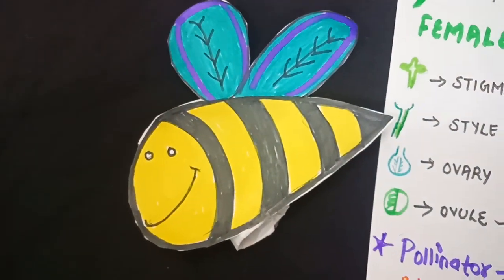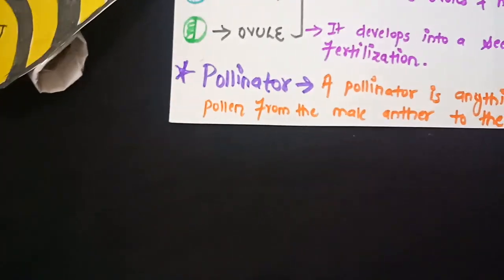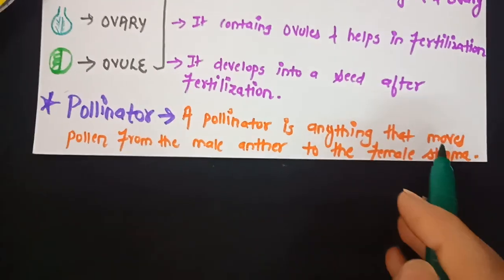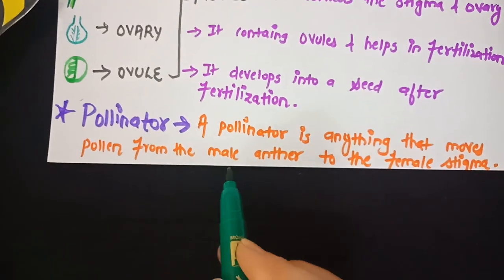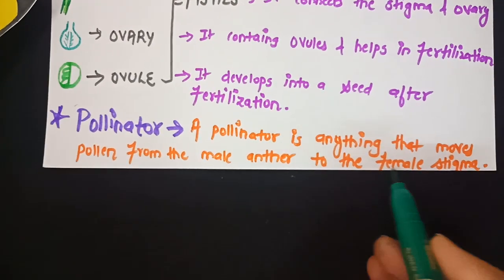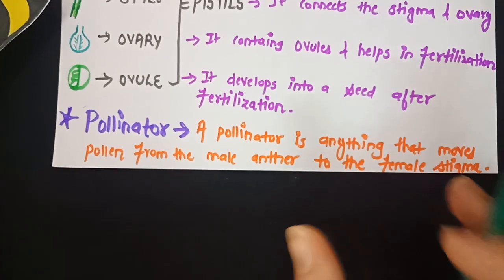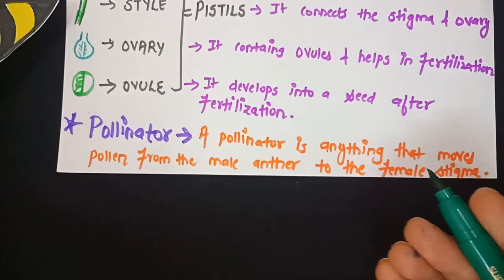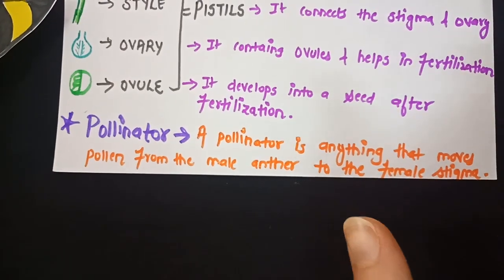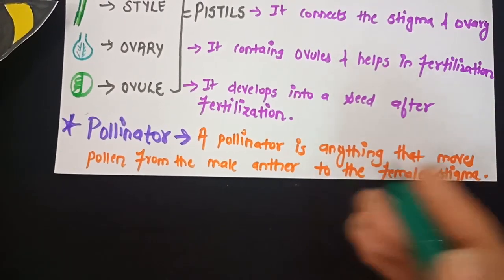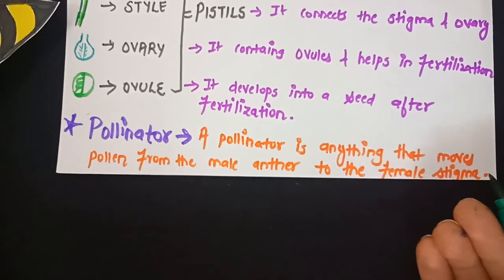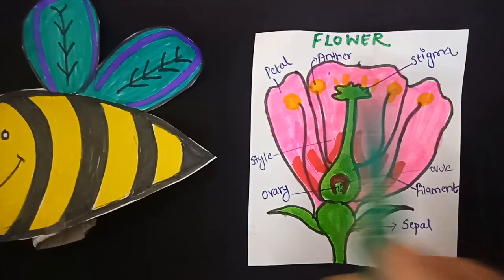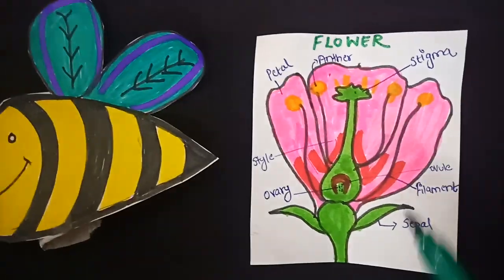A pollinator is anything that moves pollen from the male anther of a flower to the female stigma of a flower, for the sake of fertilization, which results in the formation of a new seed and then a new plant called a seedling.